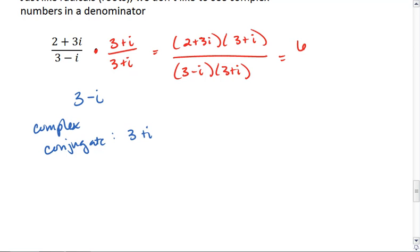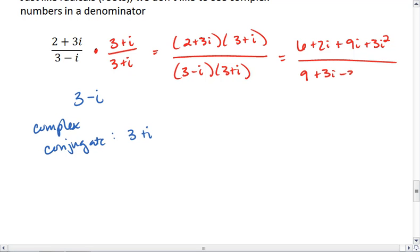we get 6 plus 2i plus 9i plus 3i squared, all over 9 plus 3i minus 3i minus i squared.